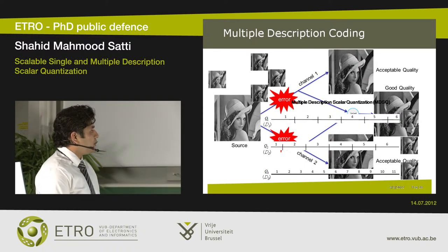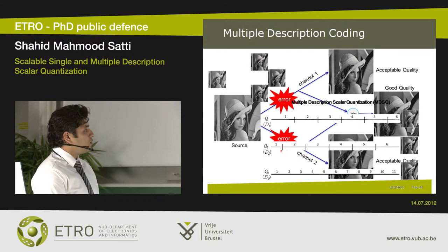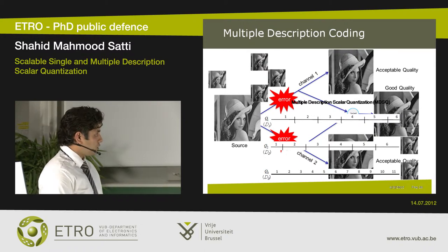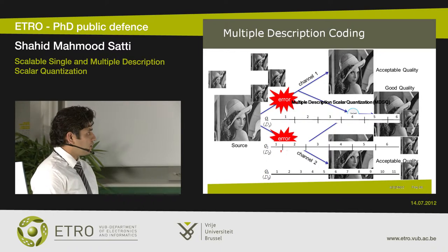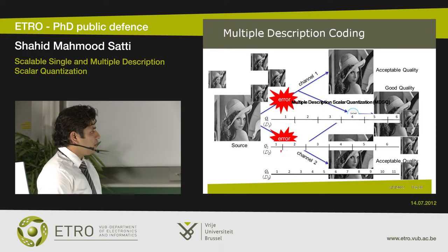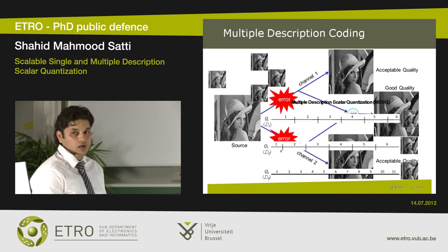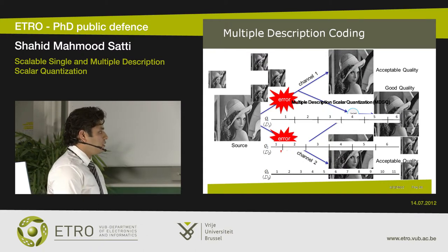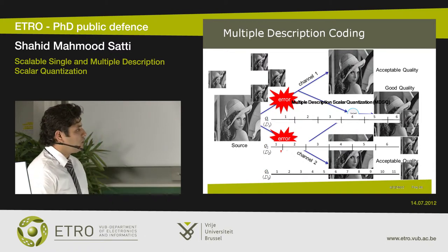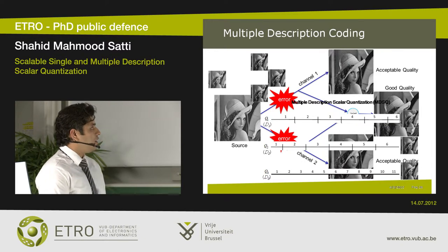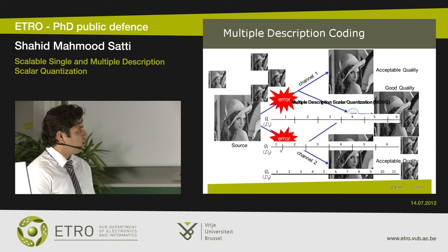How are the descriptions created? We take our original signal and quantize it with Q1 to produce an acceptable quality reconstruction. Again we take the signal and quantize it with Q2 for another acceptable quality description. And since these are mutually refinable, we can combine these two descriptions — or indices from these two quantizers — to do inverse quantization with Q0, the central quantizer, and produce the high quality joint reconstruction.